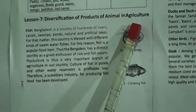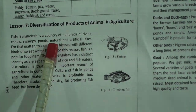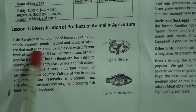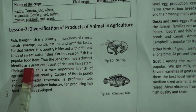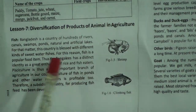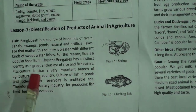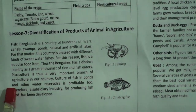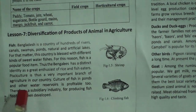Now come to our lesson. Today we will read Chapter 1, Lesson 7 and Lesson 8. Lesson 7: Diversification of Products of Animals in Agriculture. Fish: Bangladesh is a country of hundreds of rivers, canals, swamps, ponds, and natural and artificial lakes. For that reason this country is blessed with different kinds of sweet water fishes. Fish is a popular food item, and Bengalis have a distinct identity as great enthusiasts of rice and fish. Pisciculture is thus a very important branch of agriculture in our country.